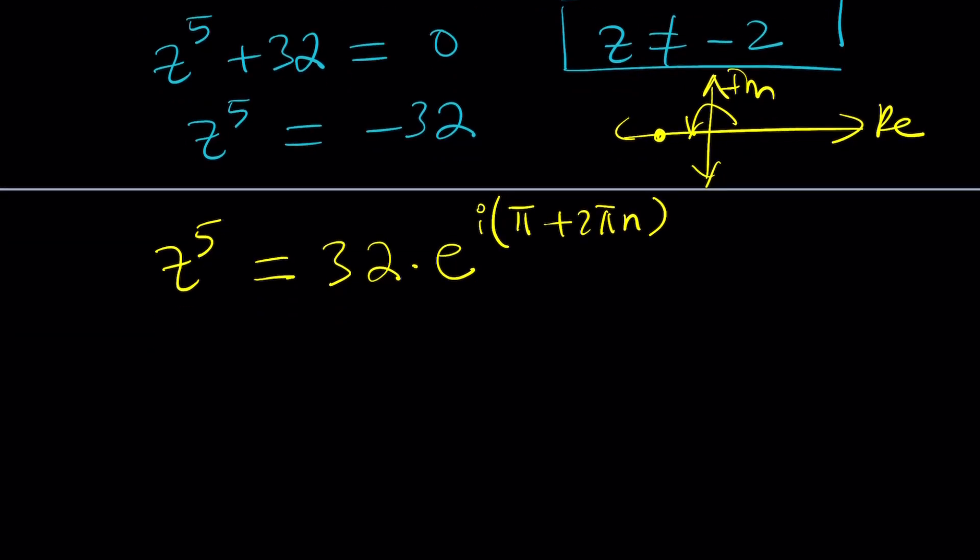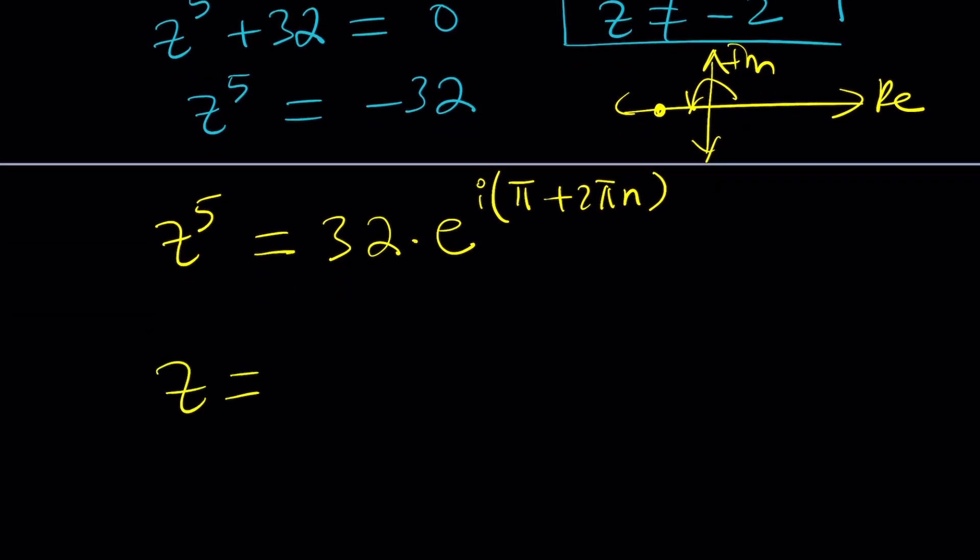Let's take the fifth root of both sides. This can be done very easily in this polar form. The fifth root of 32 is 2. And then all you have to do here is divide by 5. I can write this as 2n plus 1 multiplied by pi i. And of course, when I write it here, I'm going to divide by 5 because raising it to the power of 1 over 5 is equivalent to dividing the exponent by 5. So this is going to be the general form of our answer.